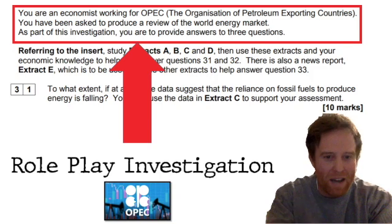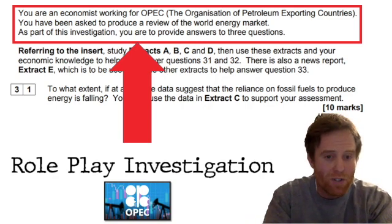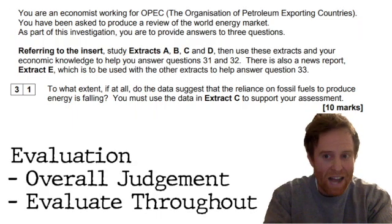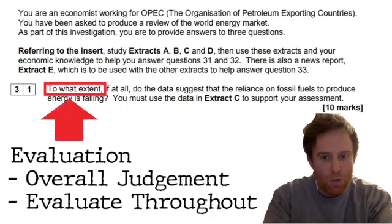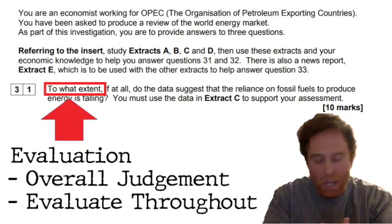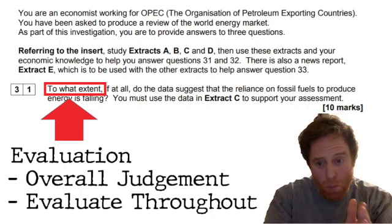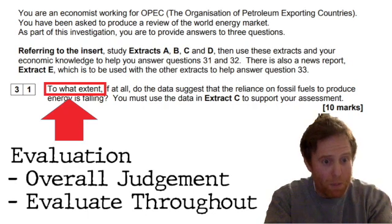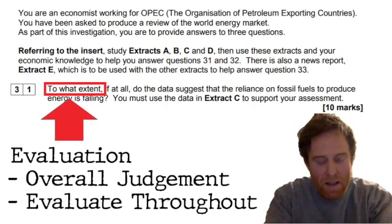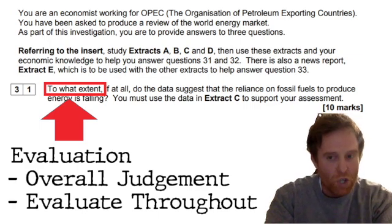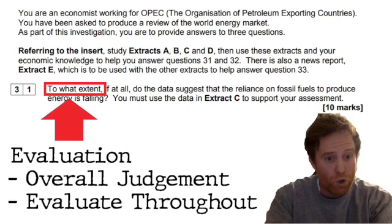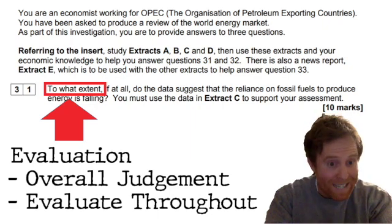I don't personally think for this 10-marker you need to worry too much about the scenario and perspective. But especially for the next couple of questions, you might have to make sure you're answering from the perspective of OPEC. With regards to 'to what extent,' it's absolutely crucial that you emphasise the evaluation required. When you look at the examiner's reports for every year there's been a Paper 3, in every single piece of examiner feedback, they are looking for an overall judgment. So you must make sure at the end of your answer there is an overall judgment — otherwise you will lose marks.